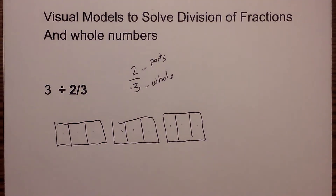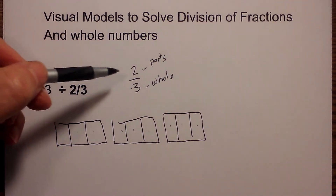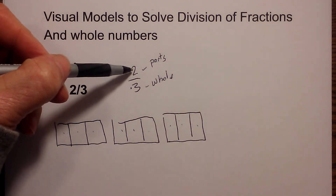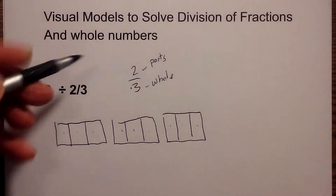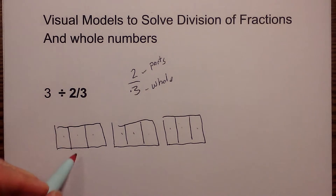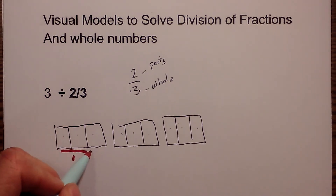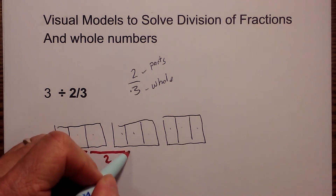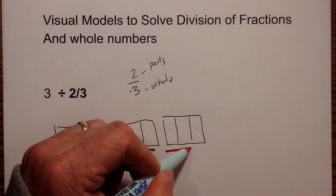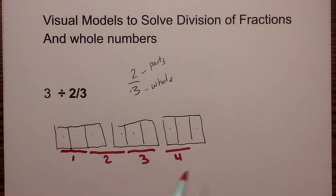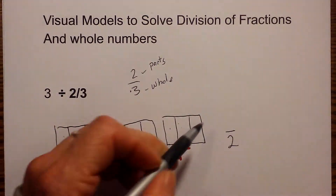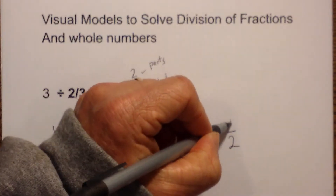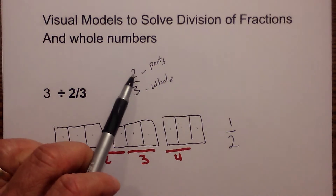So now I need to see how many fractions — which is the fraction of 2 thirds — will go into the whole. I need to be looking for 2 parts. So I am going to use a red marker. Here is 1, here is 2, here is 3, here is 4. But now we have a problem because I only have 1 and I don't have 2. Remember, we are looking for 2. So I only have 1 of the 2 parts that I need to make the fraction.